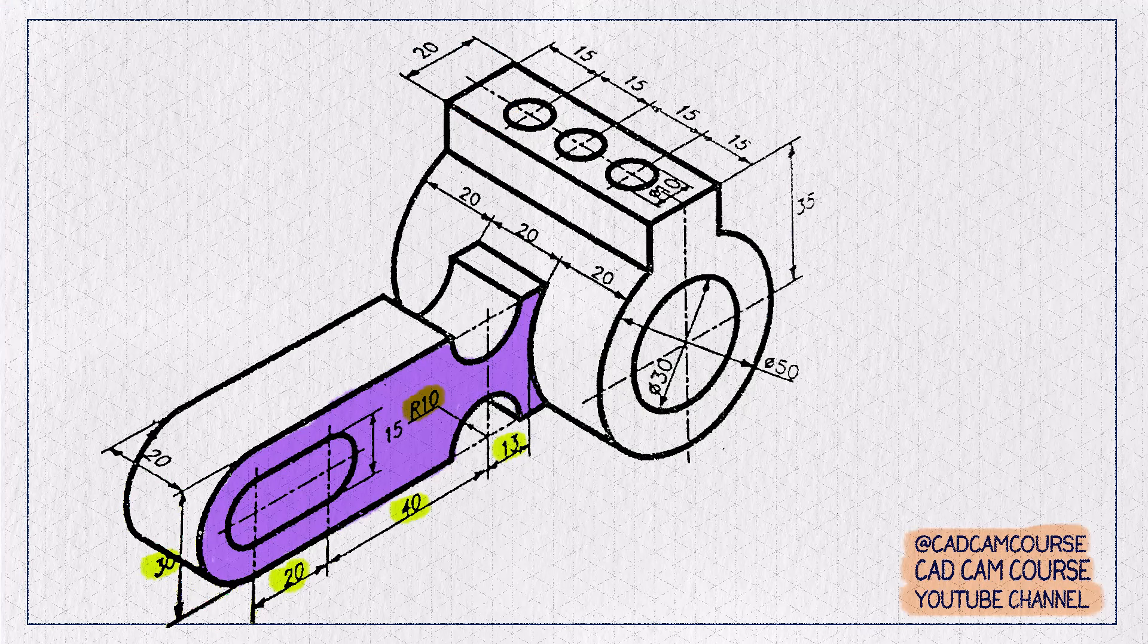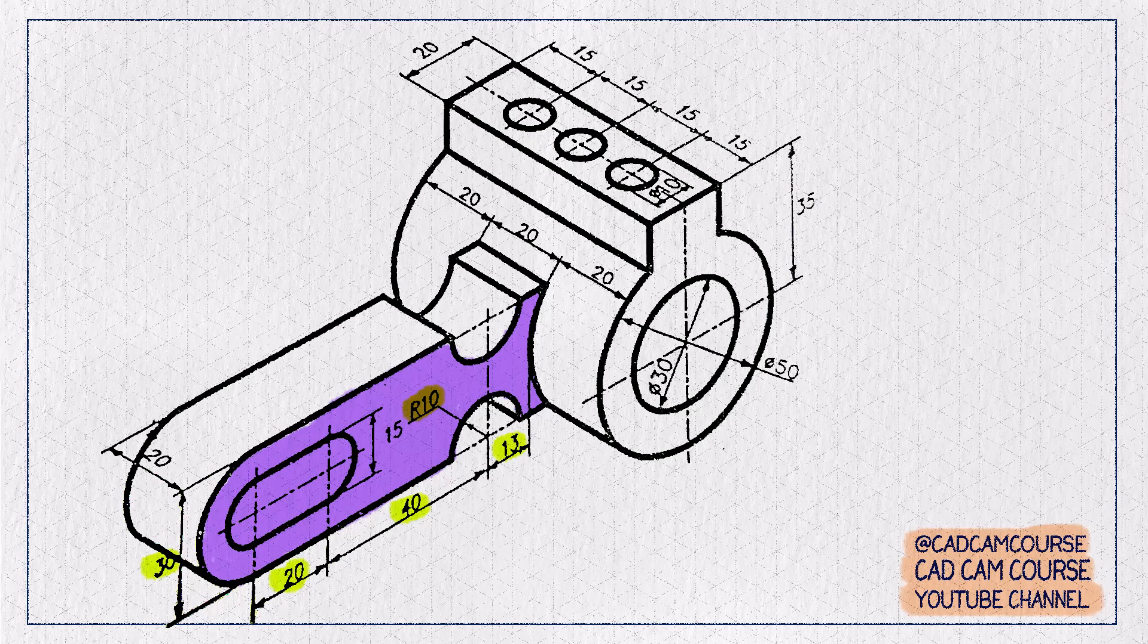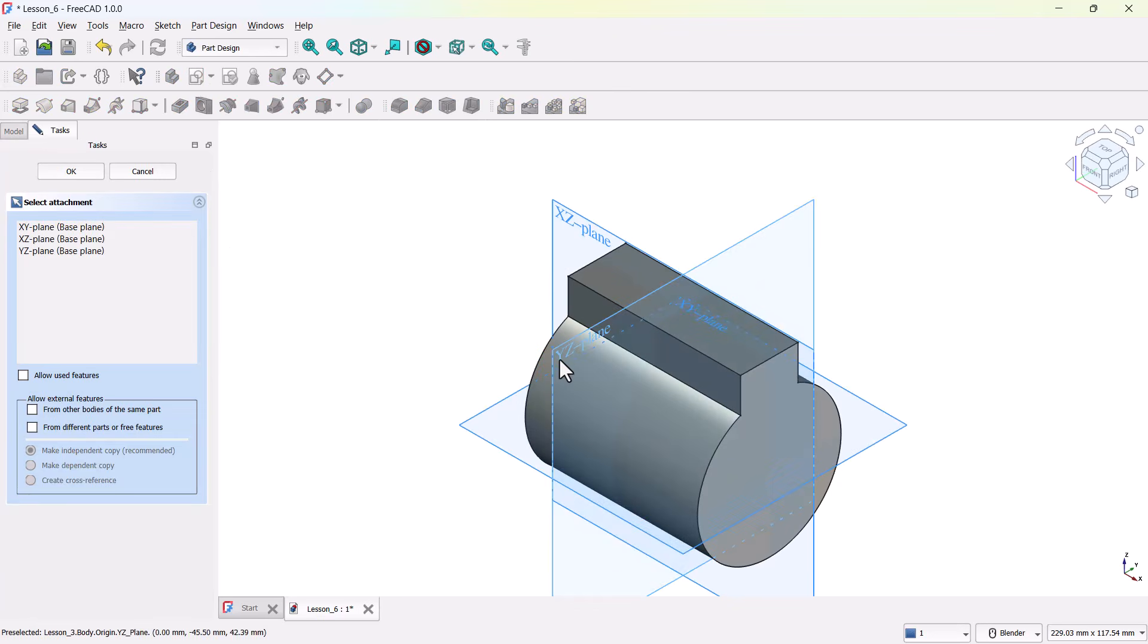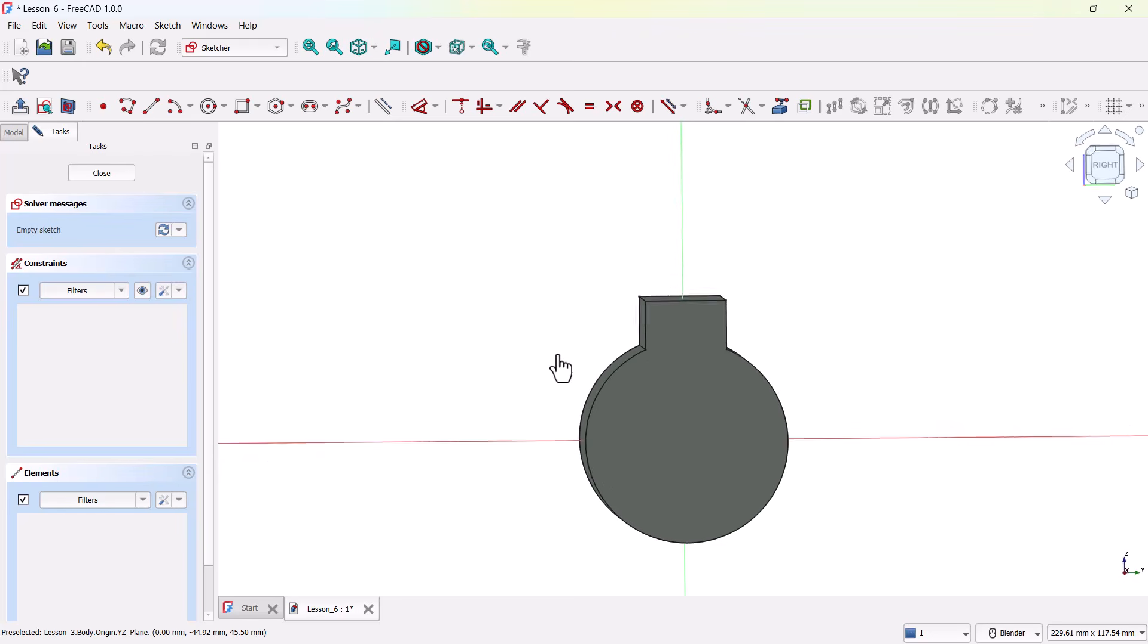Now we're moving to step three, creating this handle-like part. This handle needs to attach exactly at the middle of the cylinder we just made. That means our sketching plane has to be right in the center of the cylinder. So let's go back to the Create Sketch tool and select the YZ plane again.